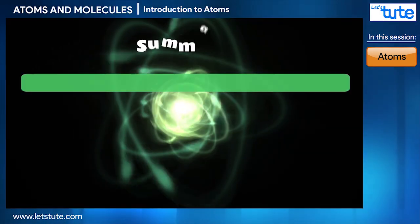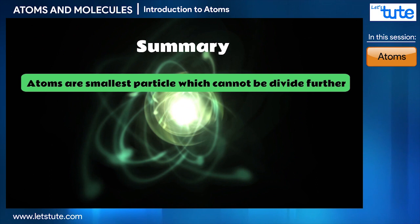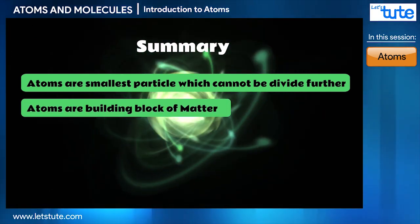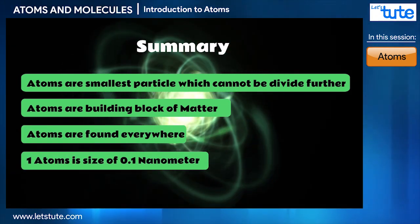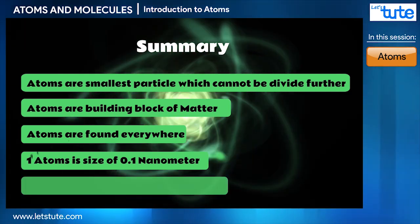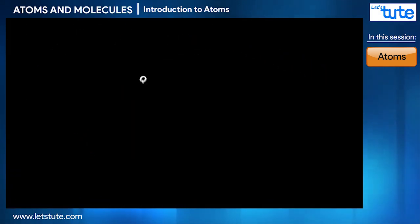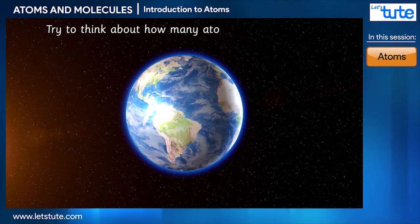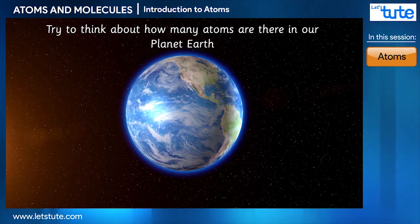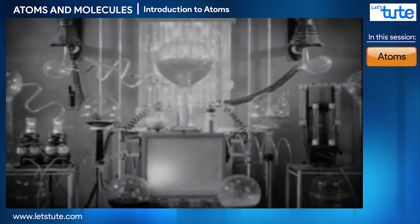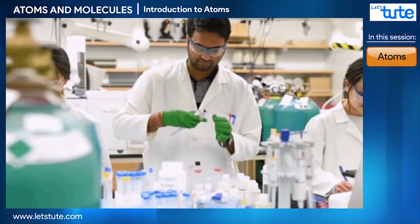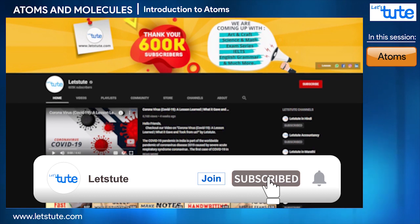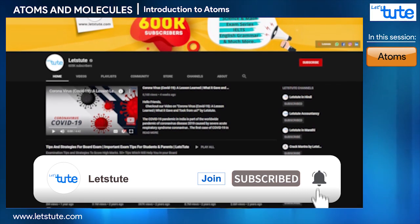So let's recollect what we have learned: atoms are the smallest particle which cannot be divided further; atoms are the building block of matter; atoms are found everywhere; one atom is 0.1 nanometers in size; atoms are measured in nanometers. Just a small quiz for you — try to think about how many atoms are there in planet Earth. Also note that atomic theory has changed over time as new technologies have become available.